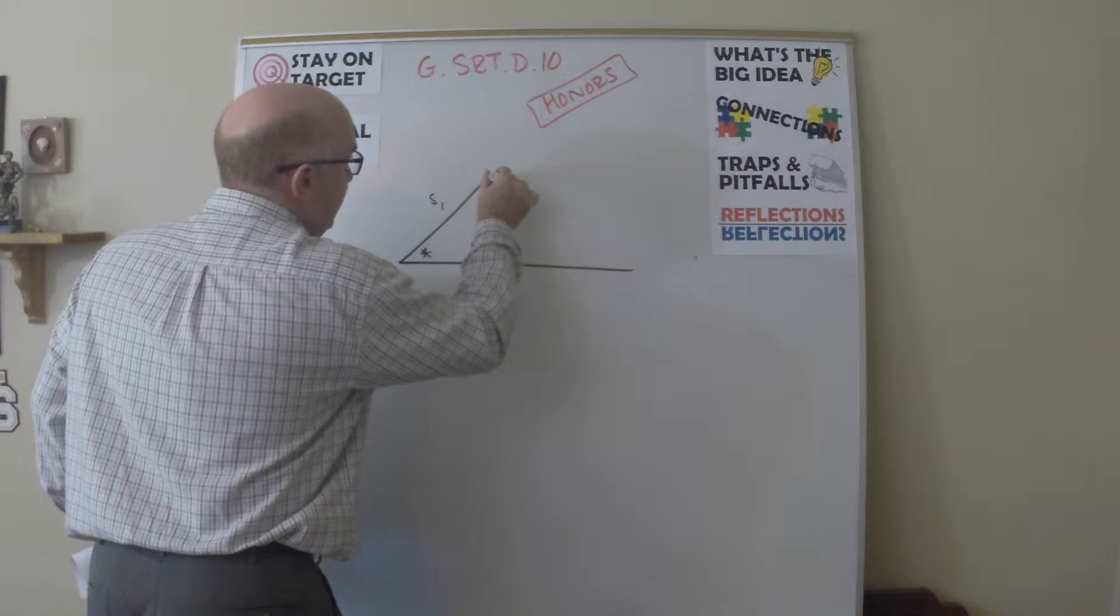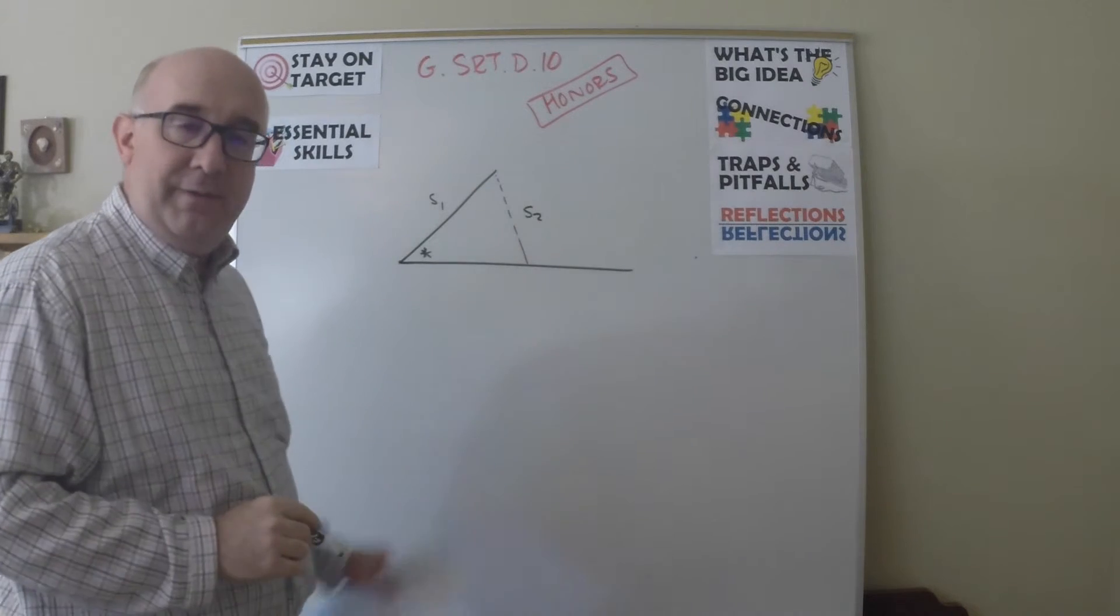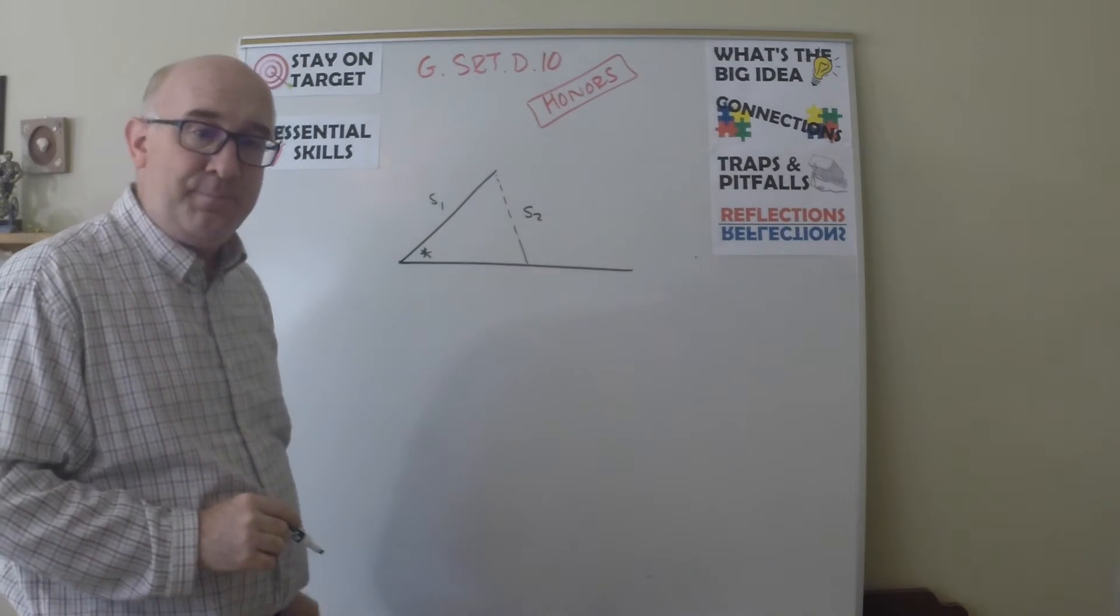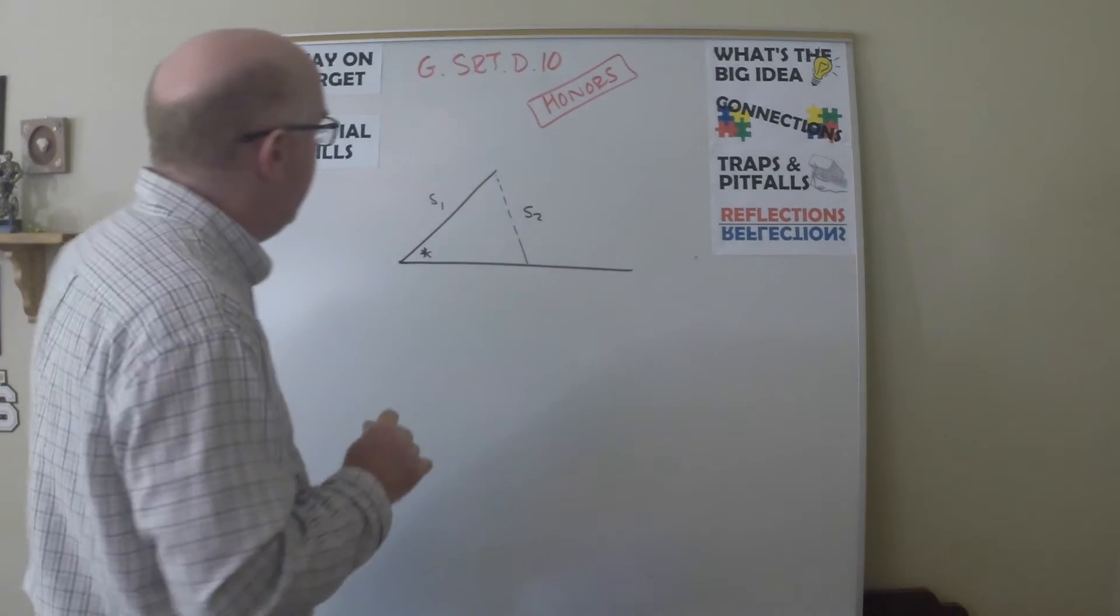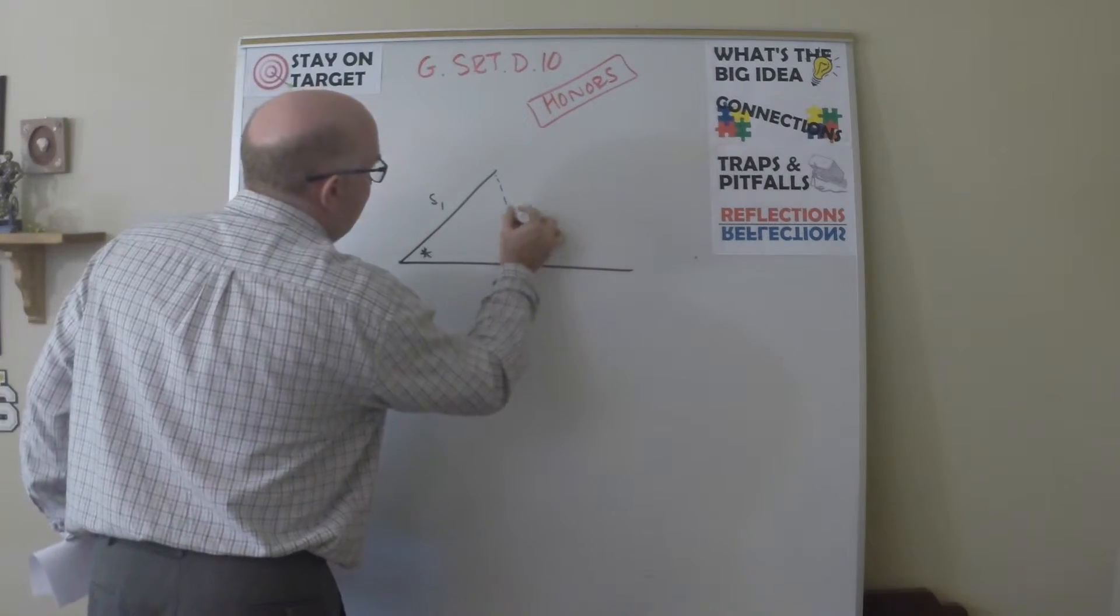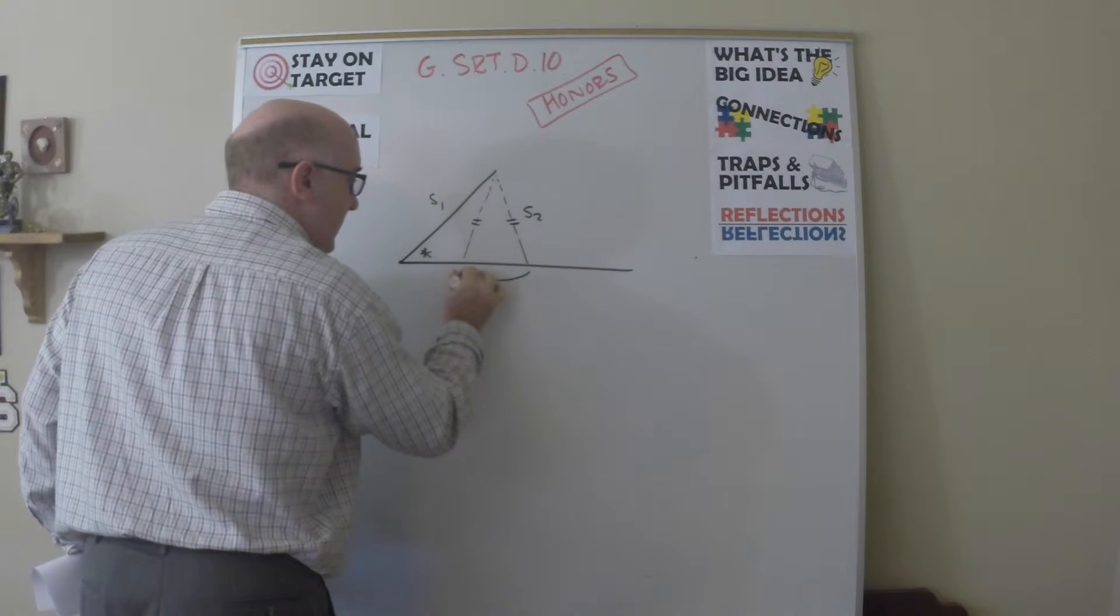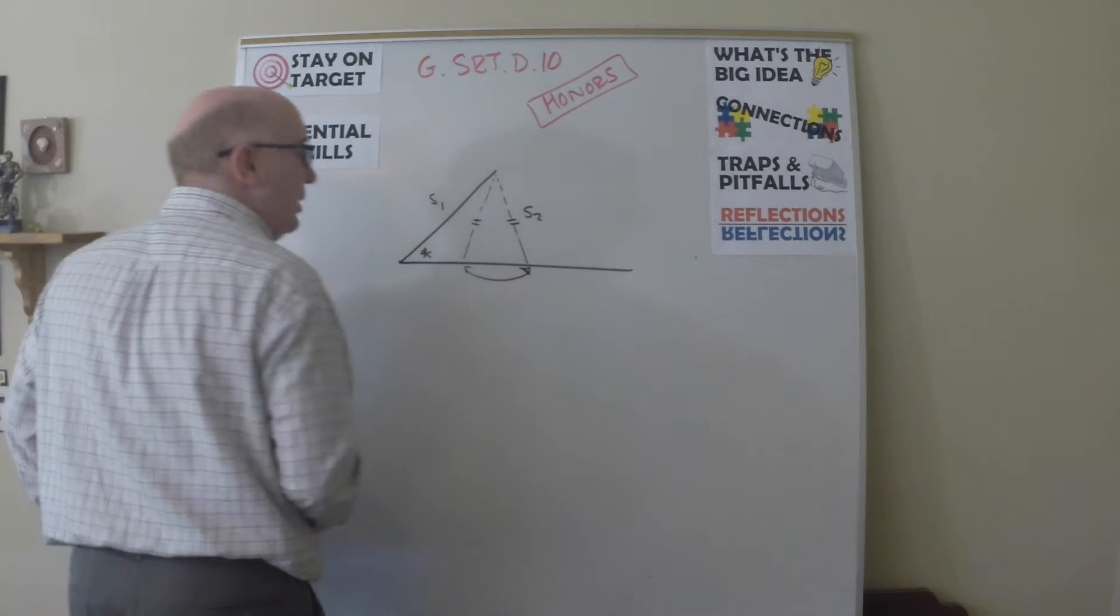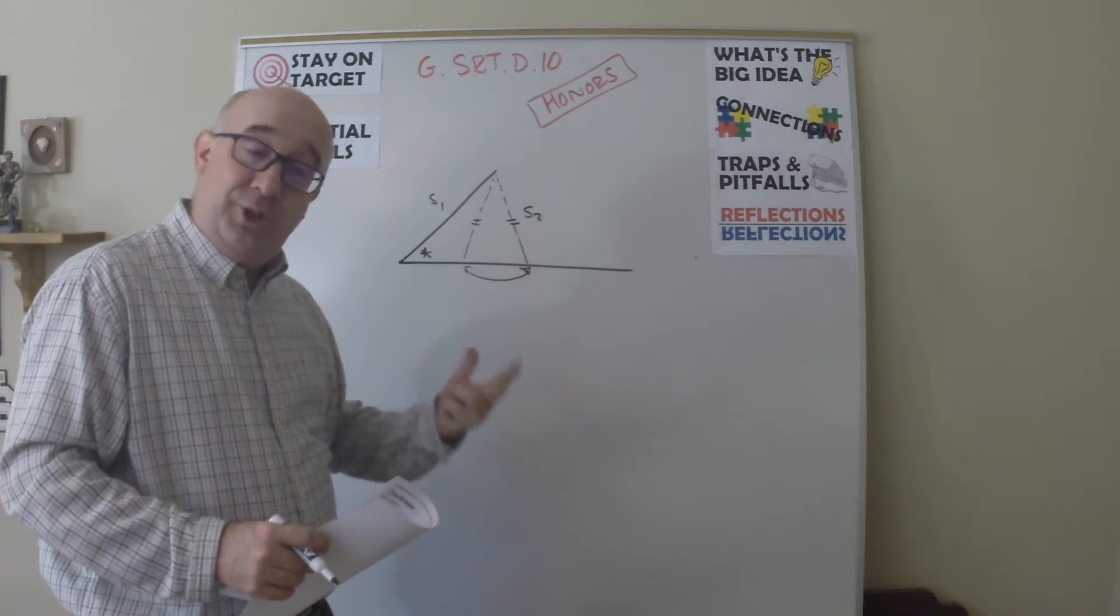So for instance, here would be a closure of an angle-side-side. The reason this doesn't establish a congruence or a single answer is that this side actually could swing into this position. You see how it could physically close the triangle in two different ways.